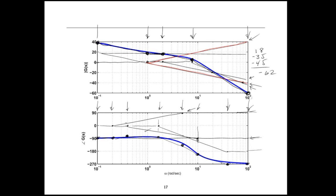To summarize, we went through the contributions of each factor of a transfer function to a Bode plot, showed how to sketch each factor and add them up to get the total Bode plot. One of the most important things are those sanity check rules that tell you what the Bode plot does at low and high frequency. This is Gordon Parker from Michigan Tech — thanks for watching.